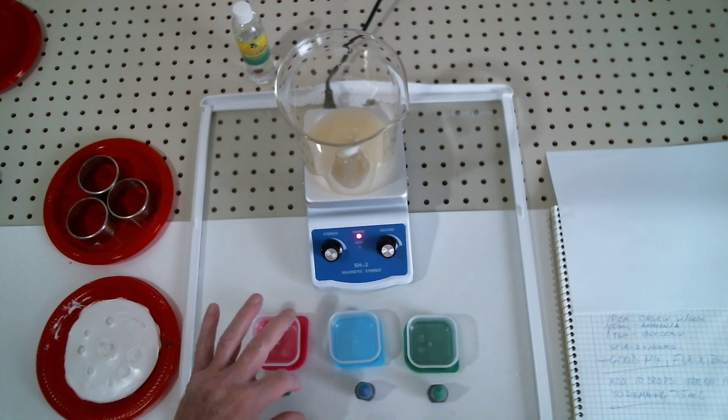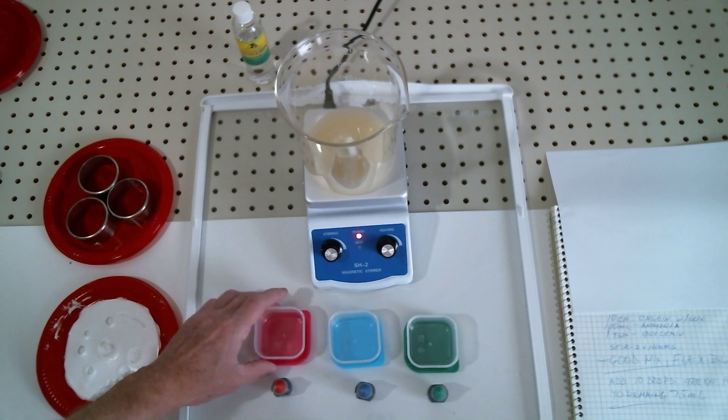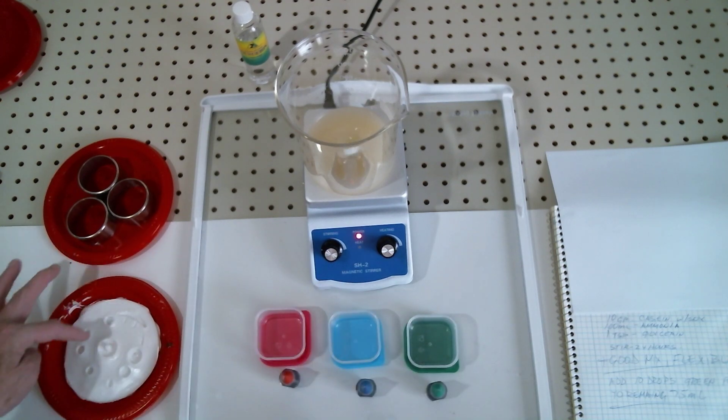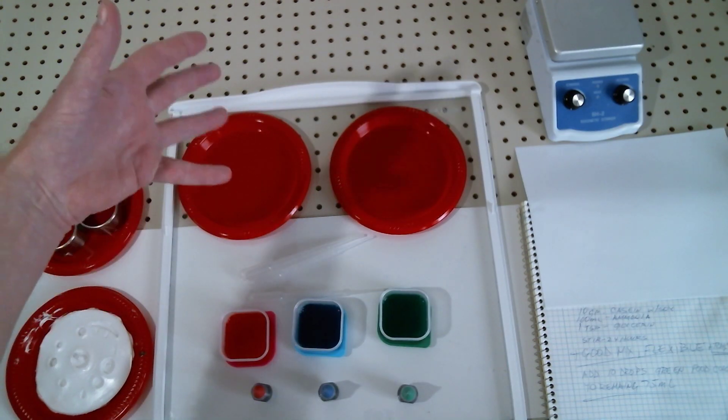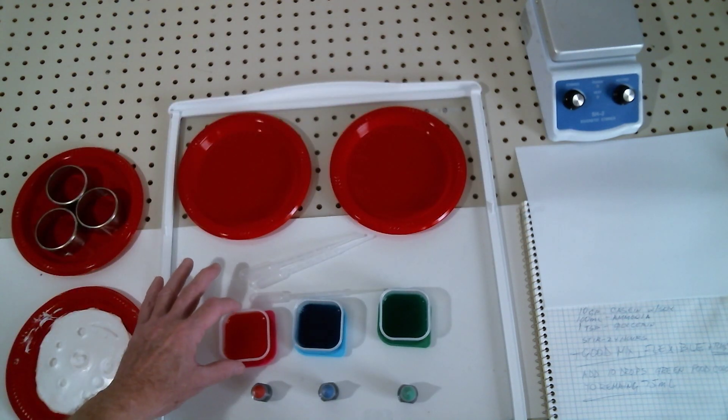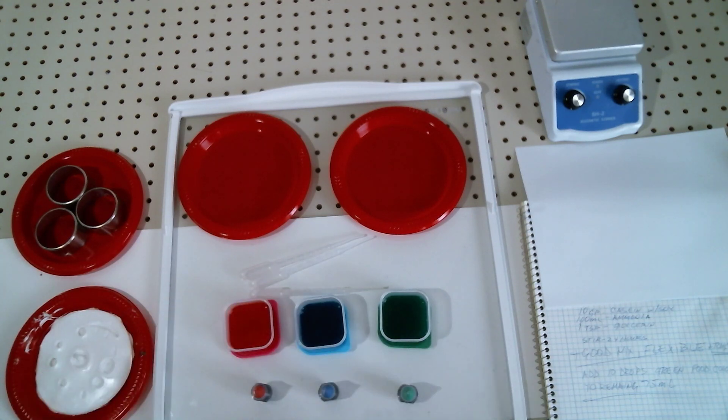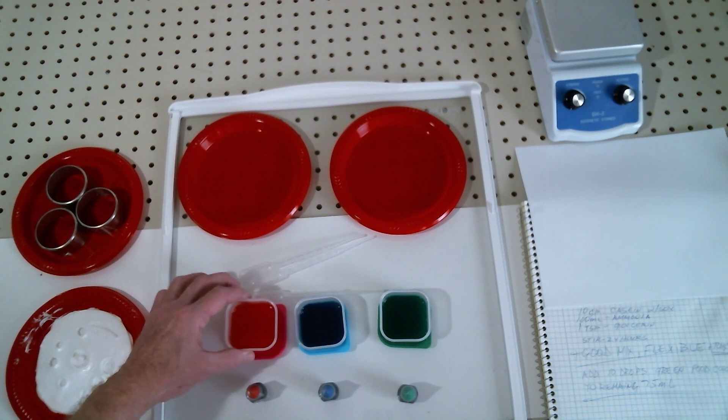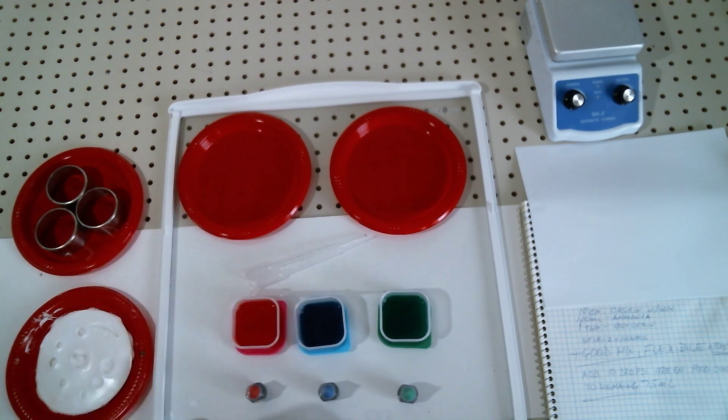As you see I have my little sample containers here, and we're going to add food color to make different colors. After we do this we're going to pour a little bit out here and make some fun shapes that we can use for jewelry. To make the red that I wanted it was five drops, so you need to play with that.